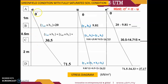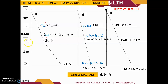It is actually a straightforward answer: because the groundwater table is at the surface of the soil, all the total stress calculations need to use gamma saturated. So for total stress at B, gamma saturated times height of layer 1 equals 20. For total stress at C, gamma saturated × H1 plus gamma saturated × H2, you obtain 30.5 kN/m².